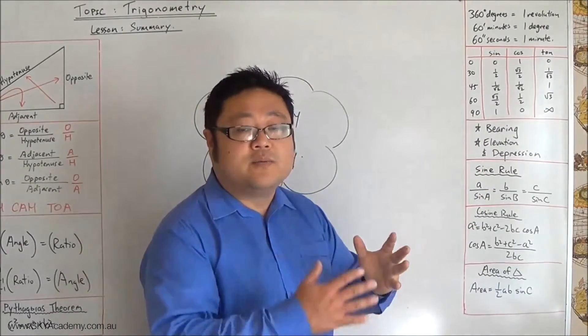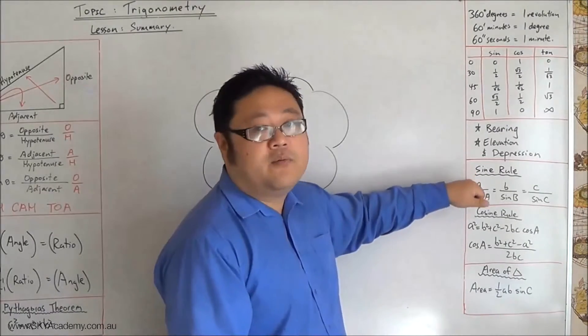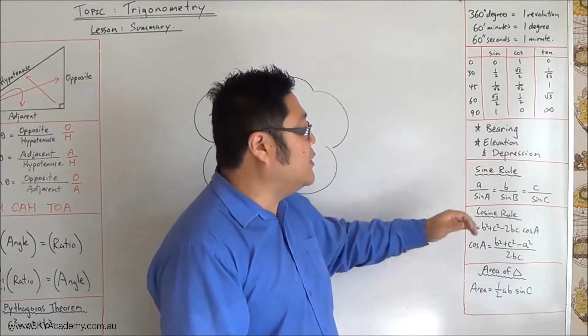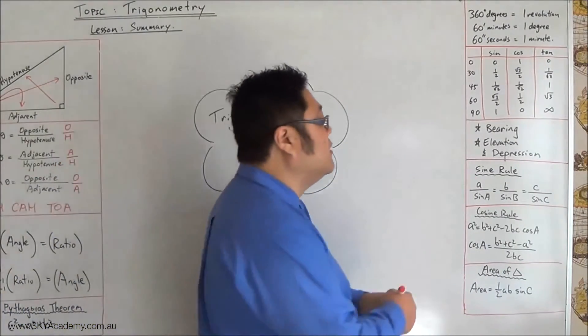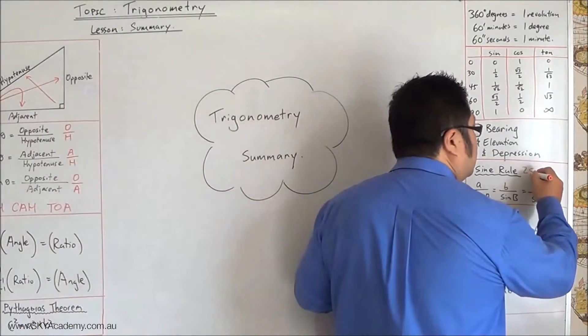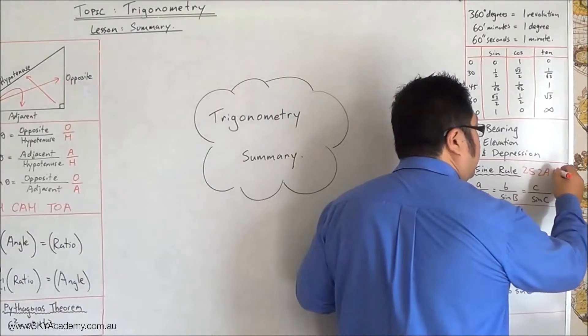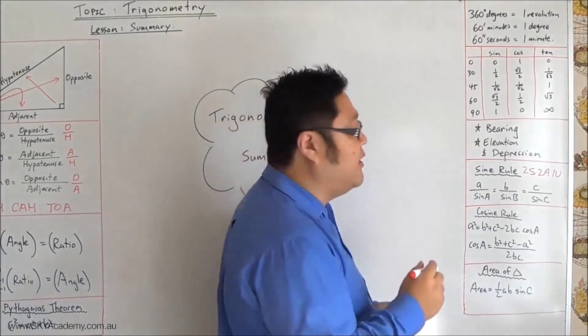We looked at the sine rule, which is basically used where you have two sides, two angles, one of which is unknown.